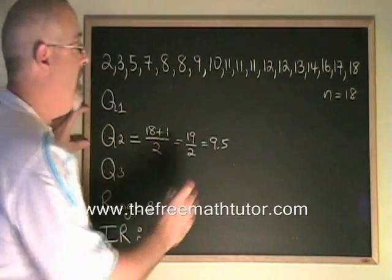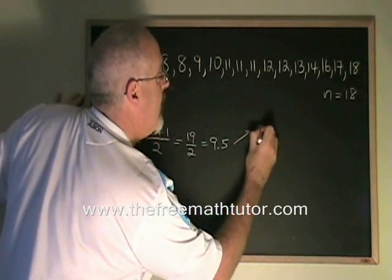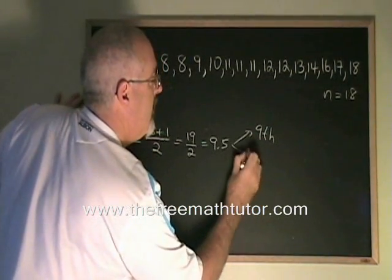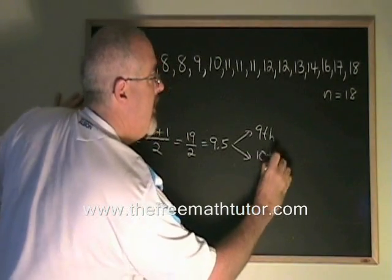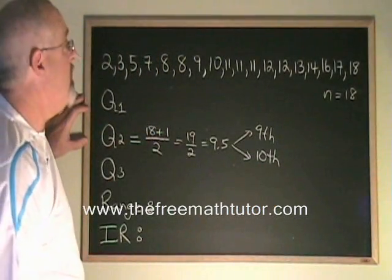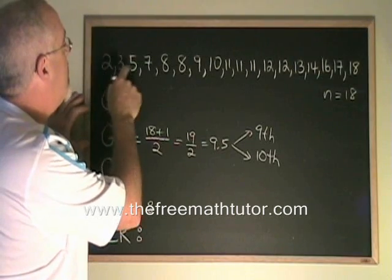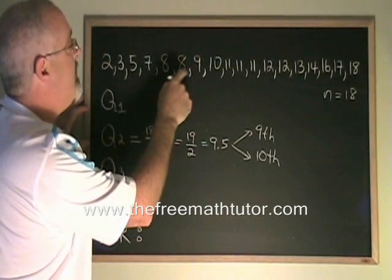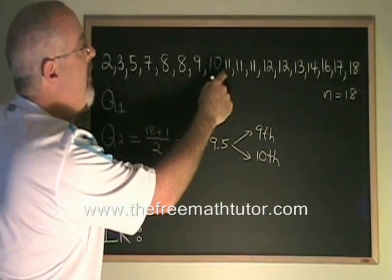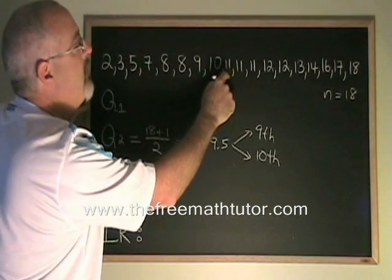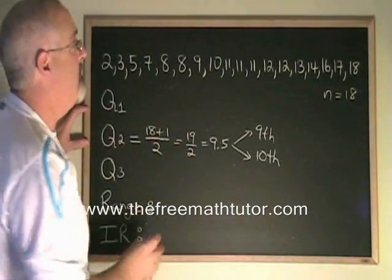9.5 means the 9th and the 10th data values. Let's find them. Counting from here, we have our 1st, 2nd, 3rd, 4th, 5th, 6th, 7th, 8th, our 9th and 10th data values are these two elevens.